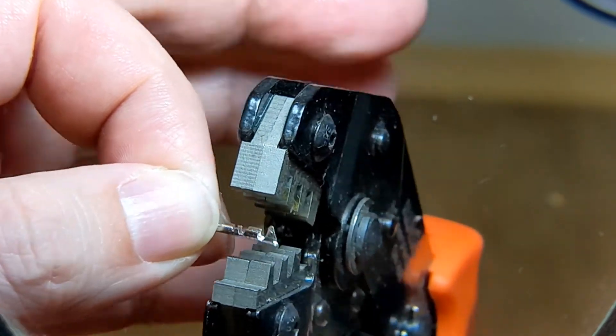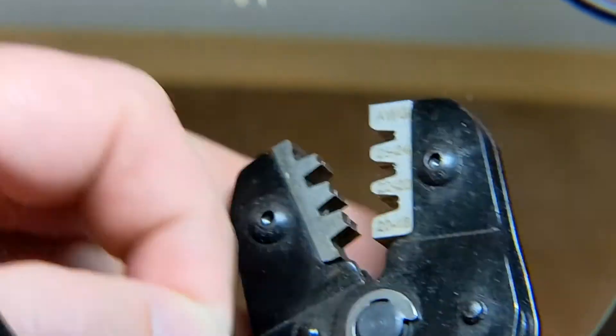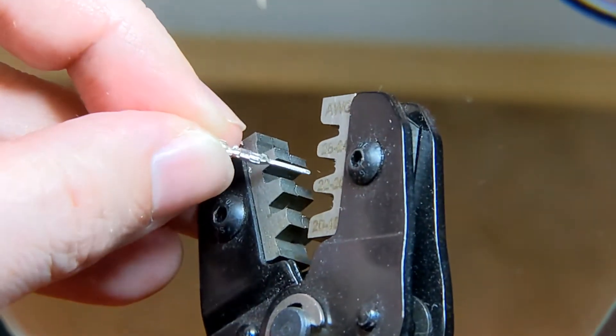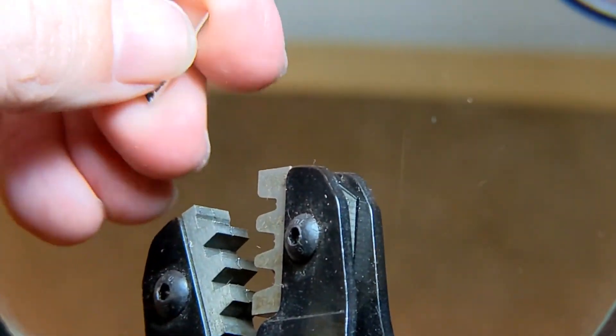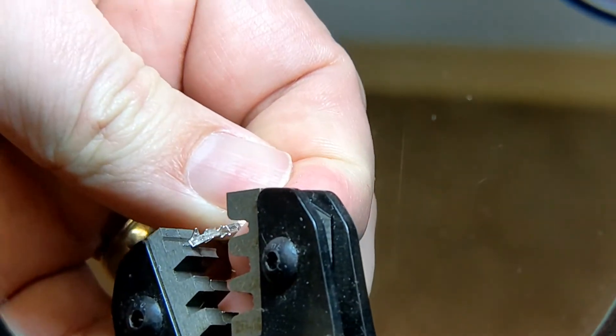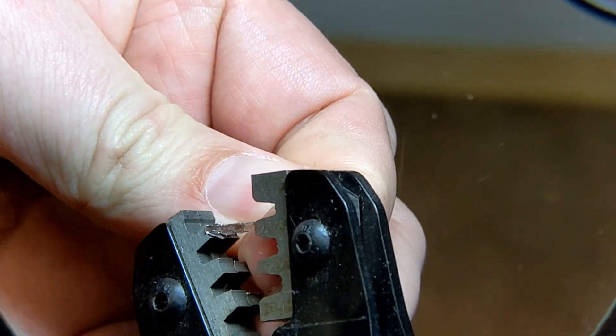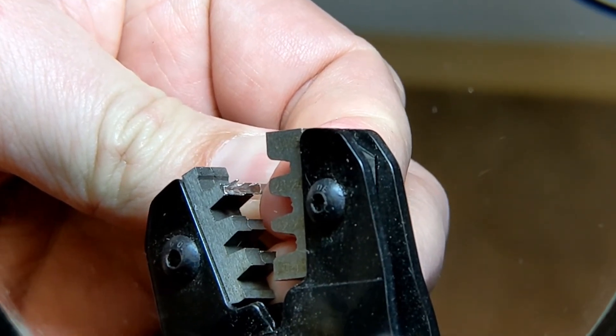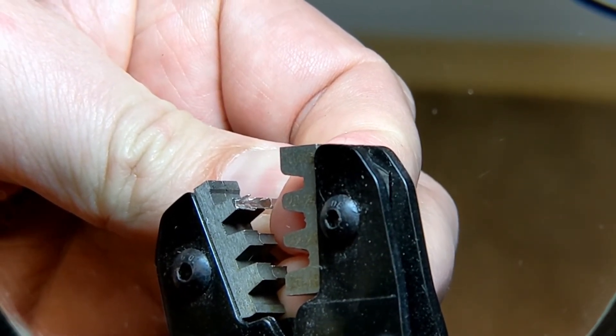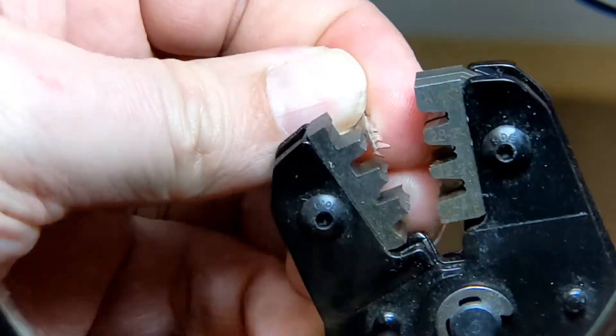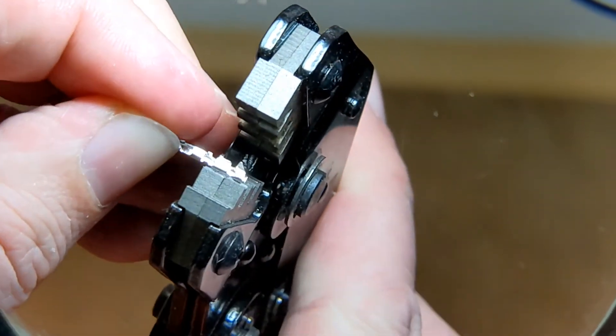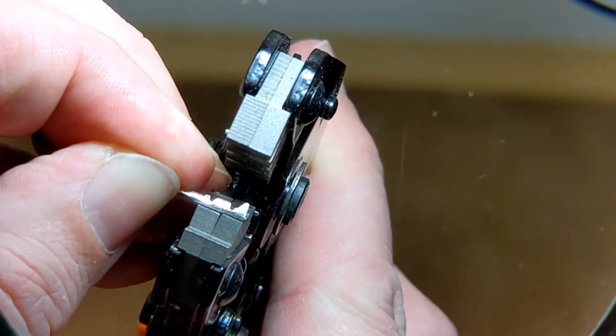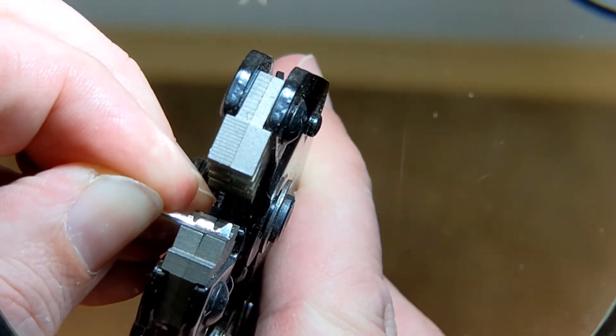When I started making my crimps, because I'm right-handed, I would usually feed the wire and the connector in from this side. And I generally would line it up so that the root of the pin was along the front edge of the crimper. But what I didn't realize is that when I did that, I was crimping way too far up and I was damaging those little tabs that hold it into the connector.